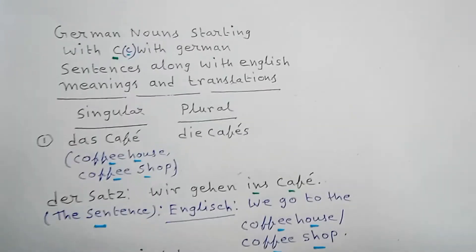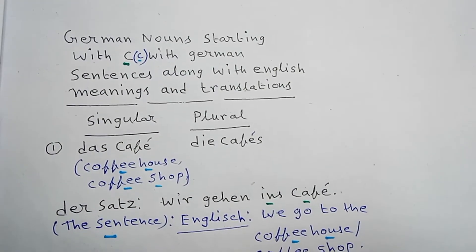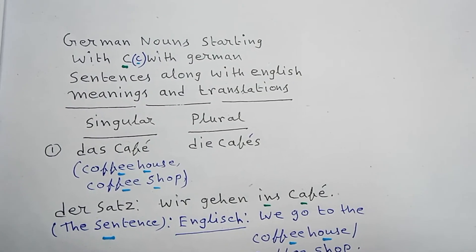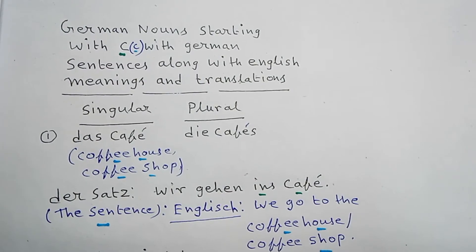Dear viewers, in this lesson, I have discussed about German words starting with C, with German sentences along with English meaning and translation. Now let us start: German nouns starting with C, with German sentences along with English meanings and translations.